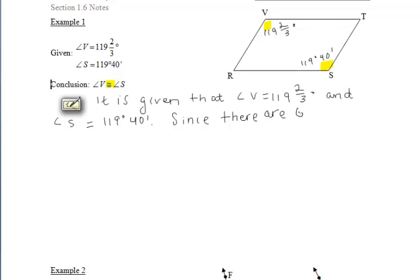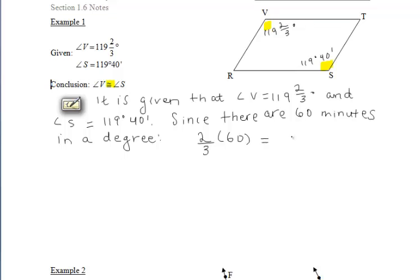We know that there are 60 minutes in each degree. Remember, you want someone who doesn't know anything about geometry to be able to read this proof and understand, so you have to explain there are 60 minutes in a degree. That means if we take our 2/3 of a degree from angle V and multiply it by 60, we are left with 40 minutes. Therefore, the measure of angle V is 119 degrees and 40 minutes.